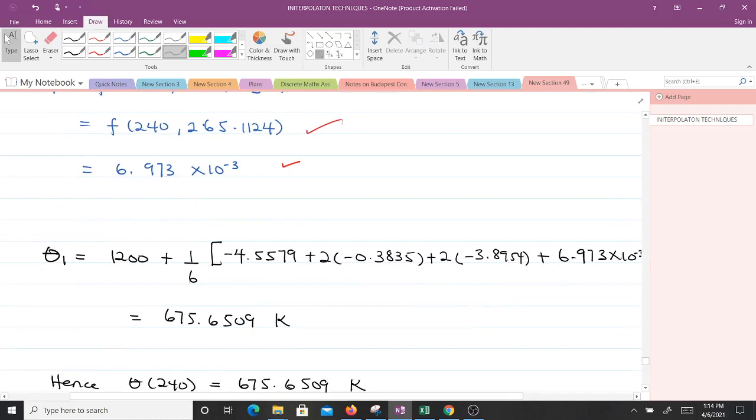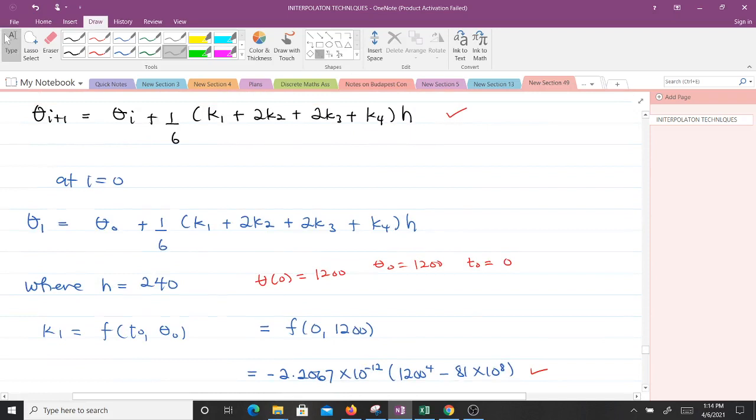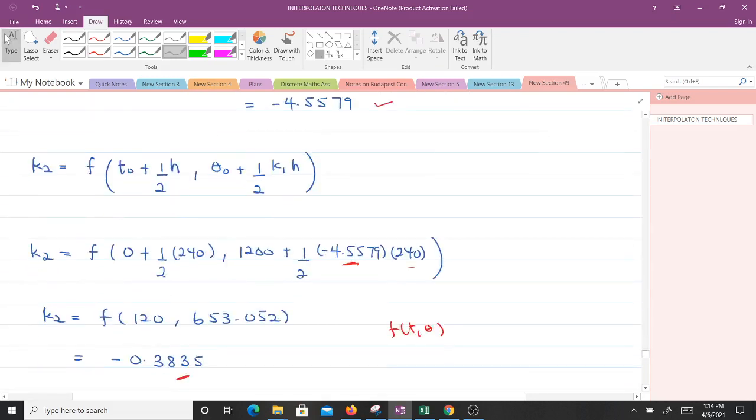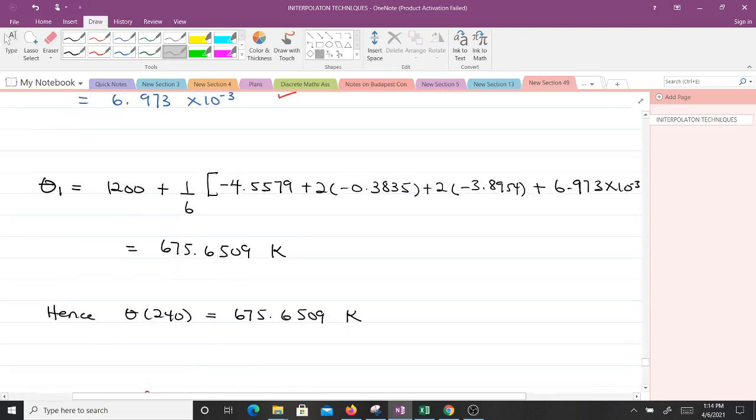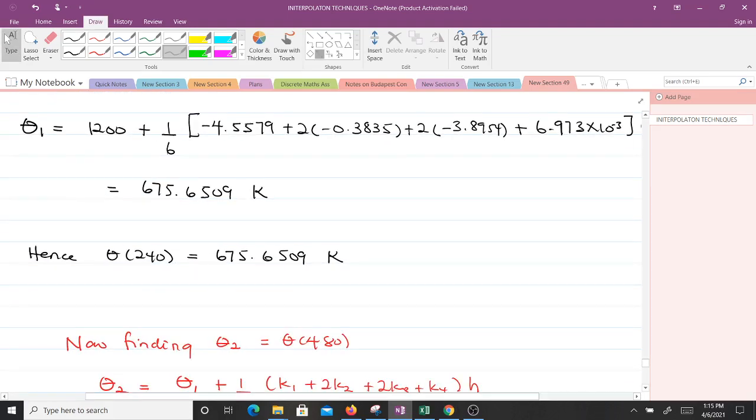That means theta 1 will be equal to, theta 1 was given by this. But now we know what K1 is, K2, K3 and K4, so we are just going to make substitutions. That means we get theta 1 will be equal to 1200 plus 1 over 6, then whatever we have in here, you can see that's our substitution. In making evaluations, we are going to get 675.6509 Kelvin. Hence, after the first iteration, we'll have theta of 240 equals 675.6509 Kelvin.